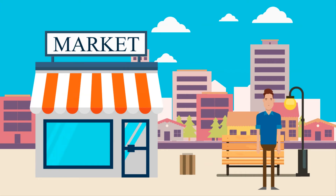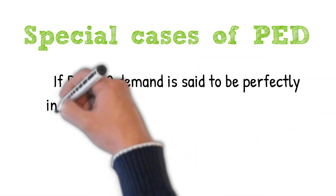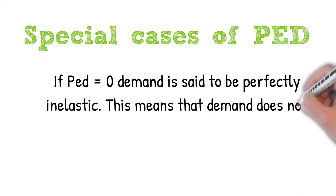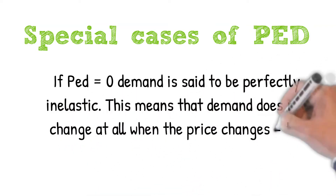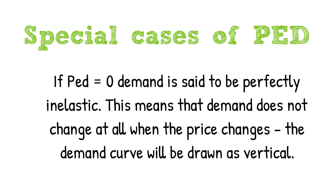PED in the short term is said to be inelastic, because it takes time for consumers to find substitute goods. If PED equals 0, demand is said to be perfectly inelastic — this means that demand does not change at all when the price changes, and the demand curve will be drawn as a vertical line.